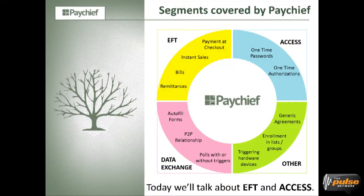We also have other authorizations, like authorizations for generic agreements and enrollments. Sometimes I want to buy a product but it's not available, so I want to be on a list to receive it as soon as possible — usually for iPhones, the new version. And with PayShift, you can authorize triggering hardware devices, like opening a bank door.